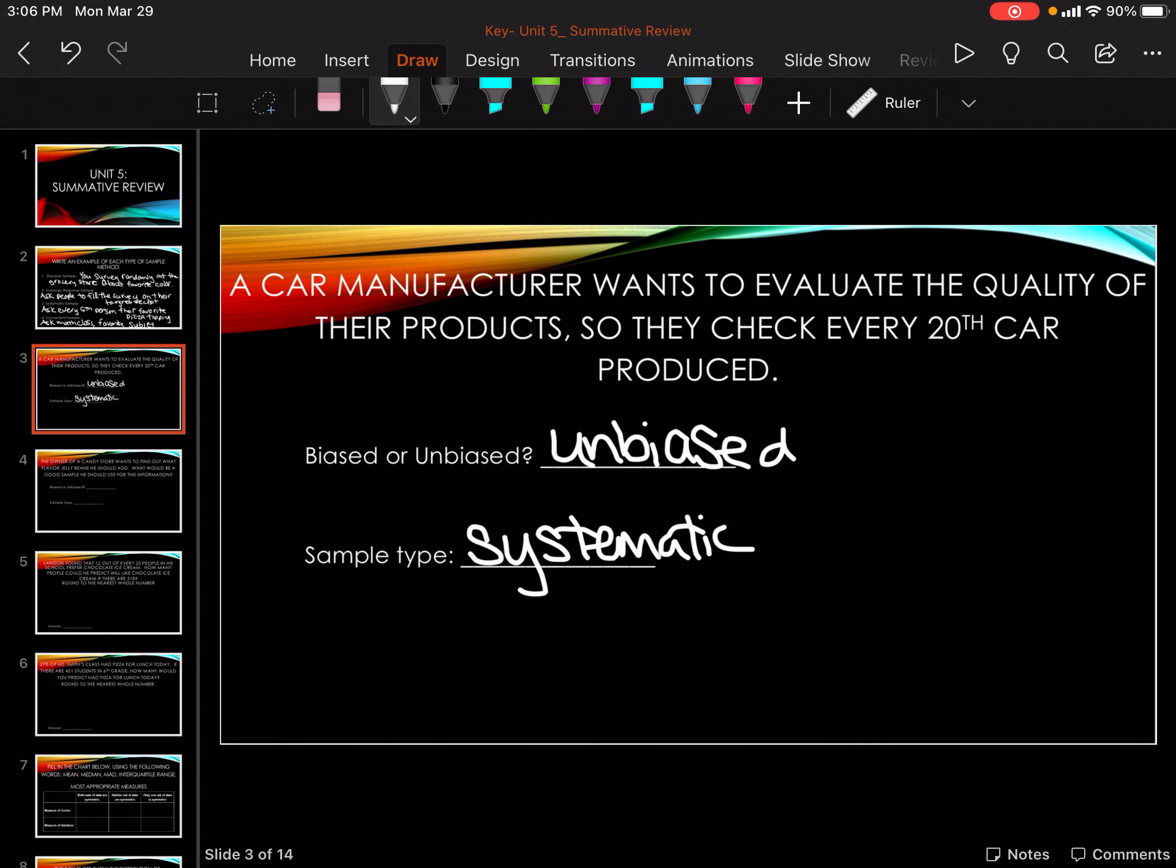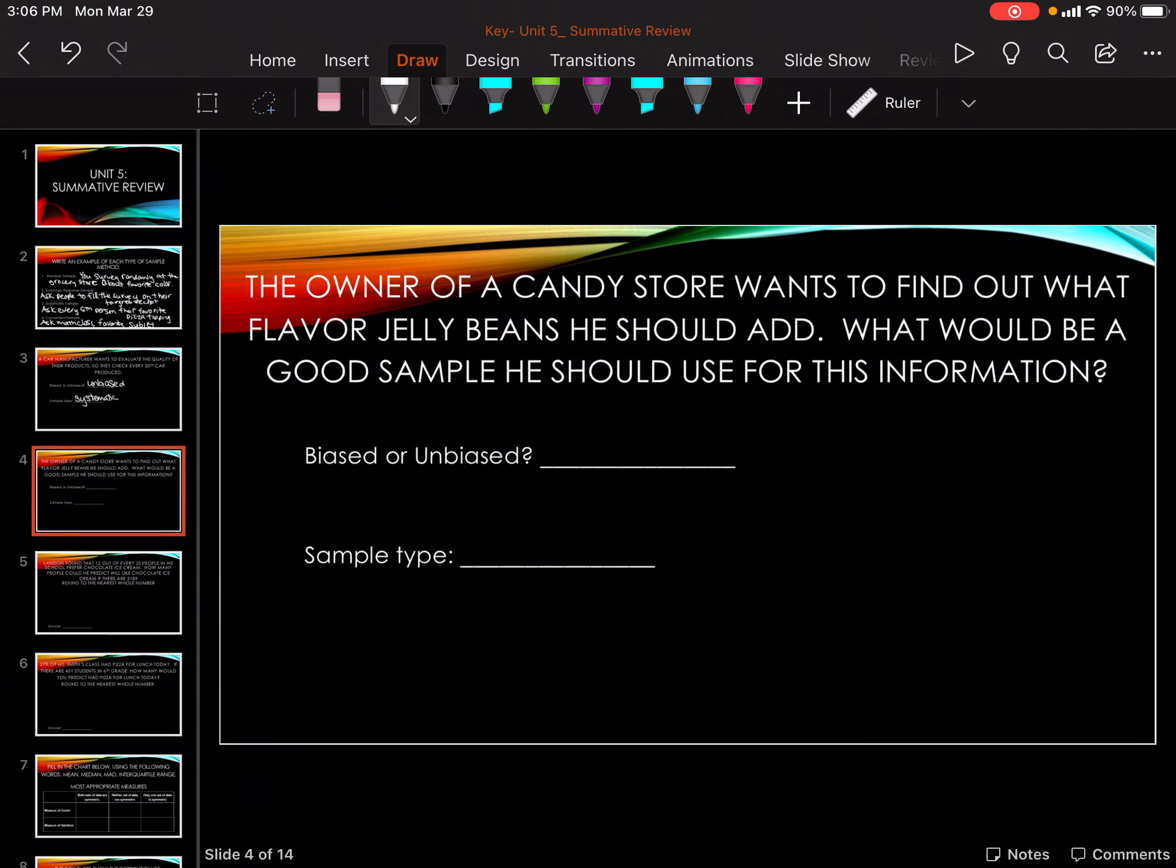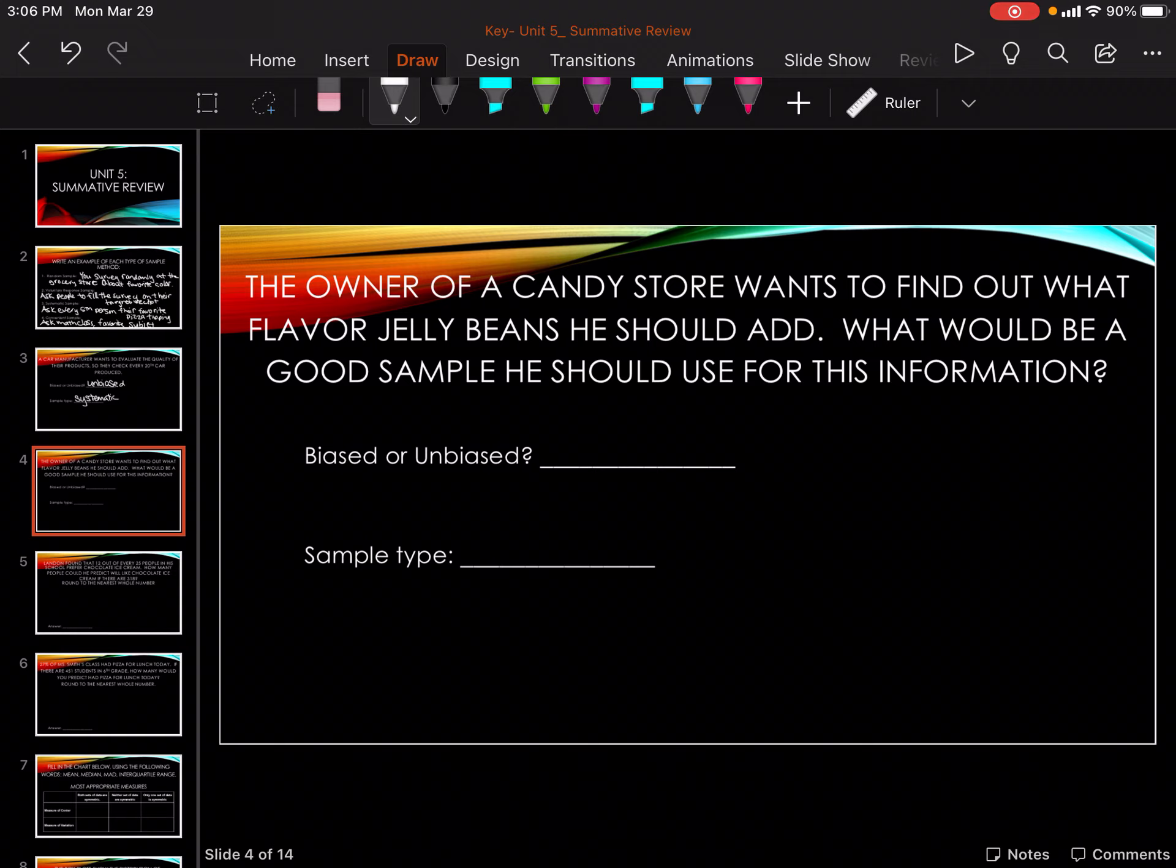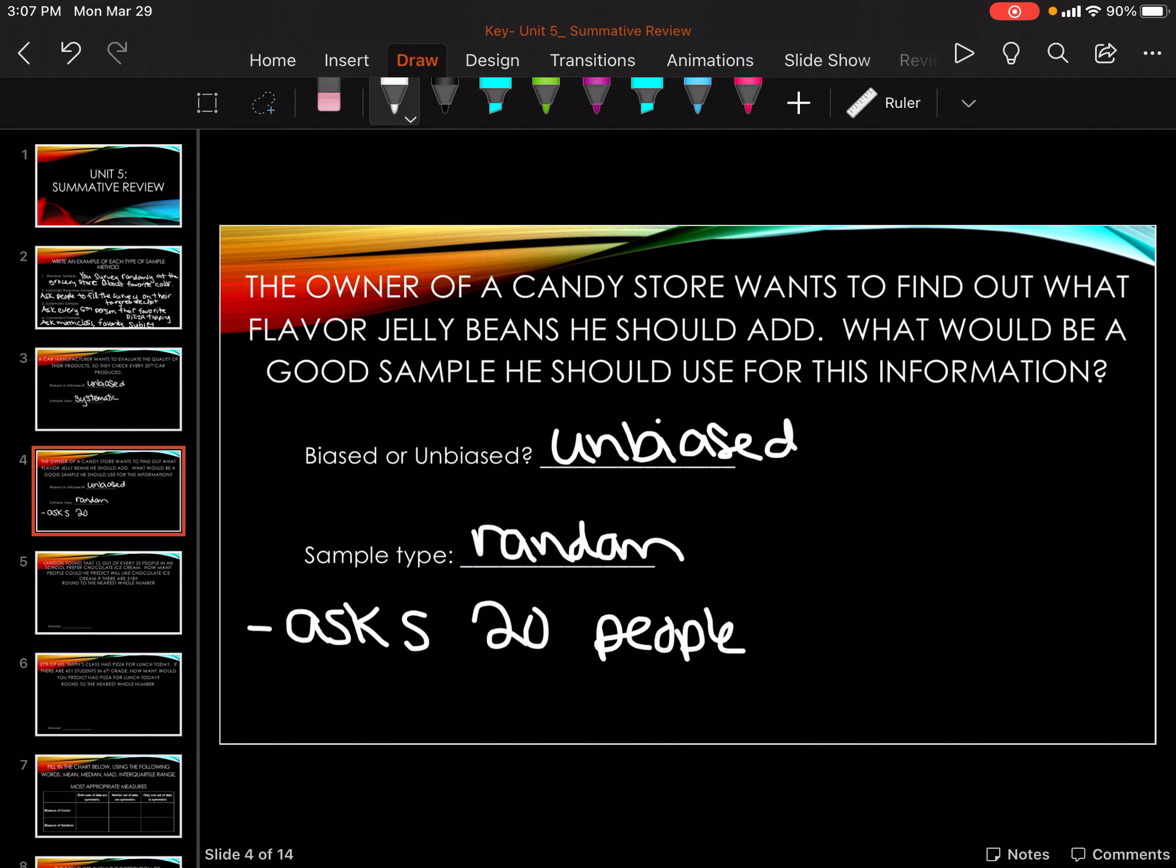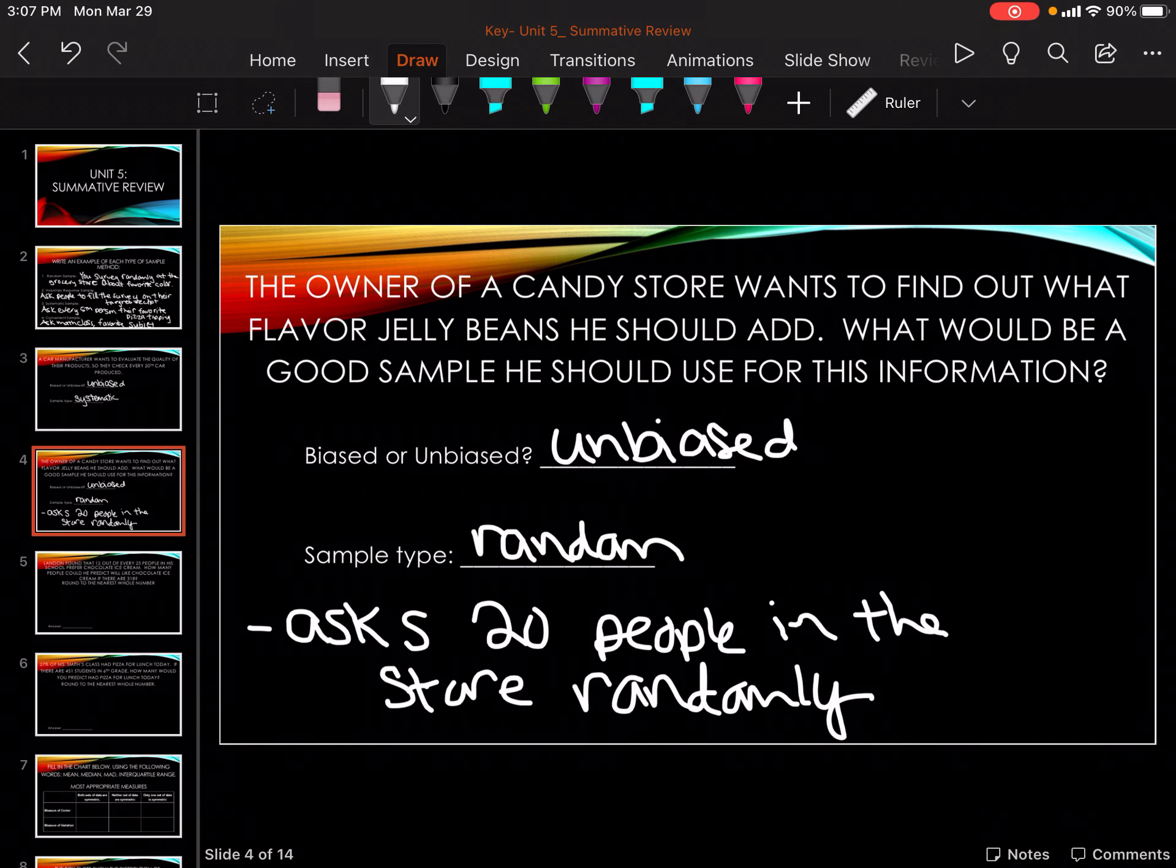The owner of a candy store wants to find out what flavor jelly beans he should add. What would be a good sample for him to get this information? Okay, so we want it to be unbiased. We could either do systematic or completely random. I'm going to do random and ask 20 people in the store randomly. Again, it could be systematic, every fourth person that walks in, that would be fine too.